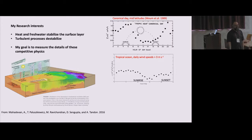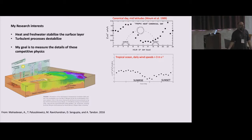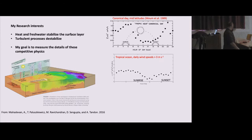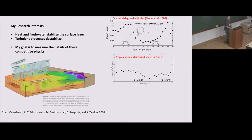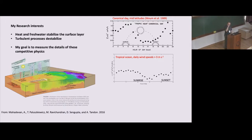The two ways to do it are: A, diminish the winds so that you're not disrupting the surface stability during the day; or B, freshen the water, so that you're putting a pre-existing layer of stability on top of which the sun can beat down and heat. I'm going to show an interesting phenomenon we've certainly observed in the tropical Atlantic, and I think we're in a good position to observe in the Bay of Bengal.